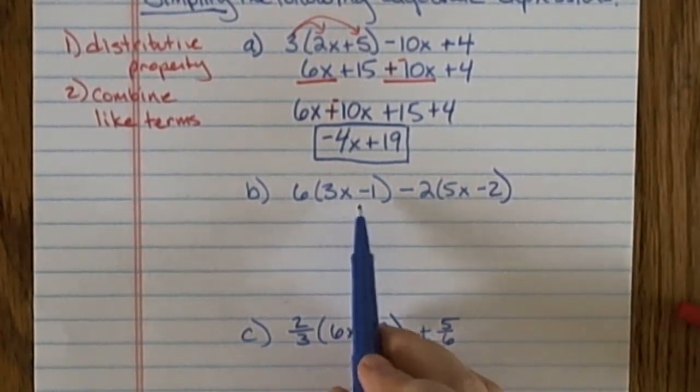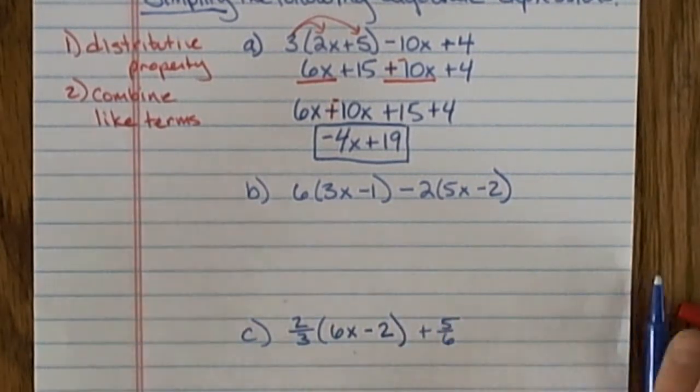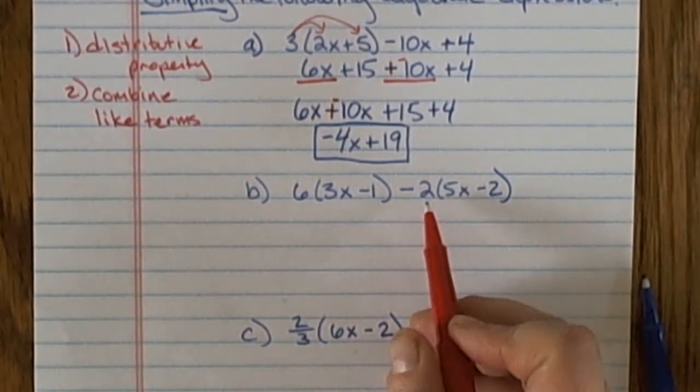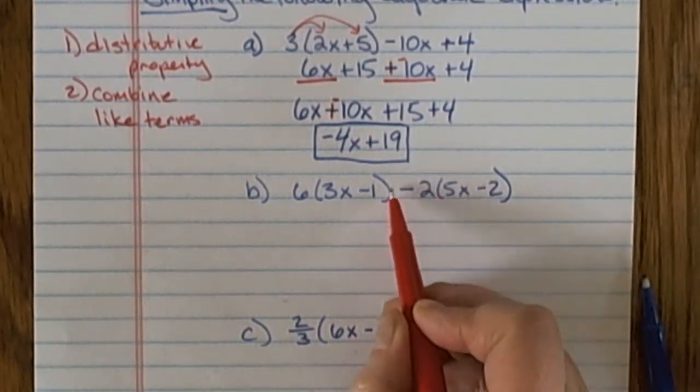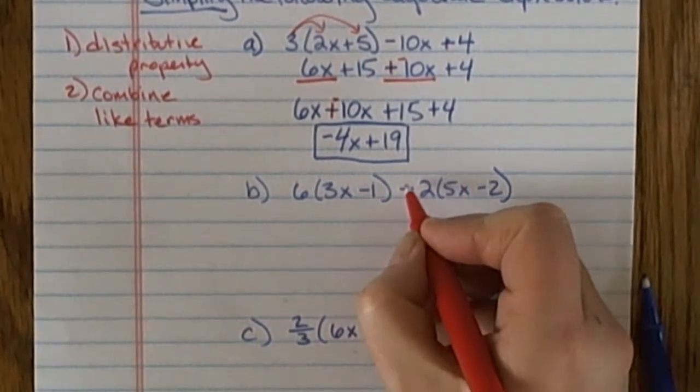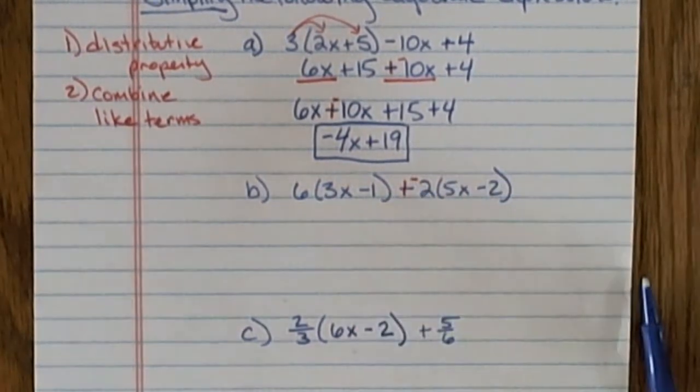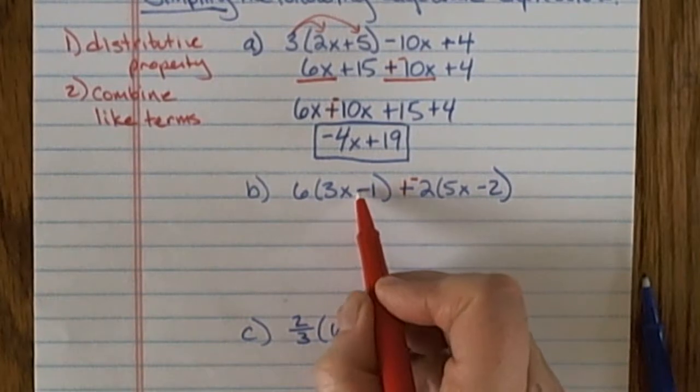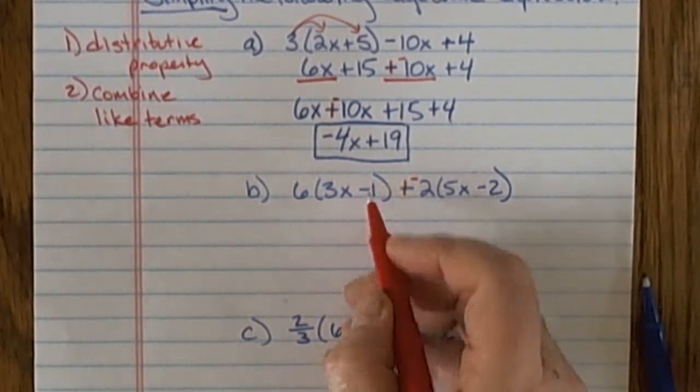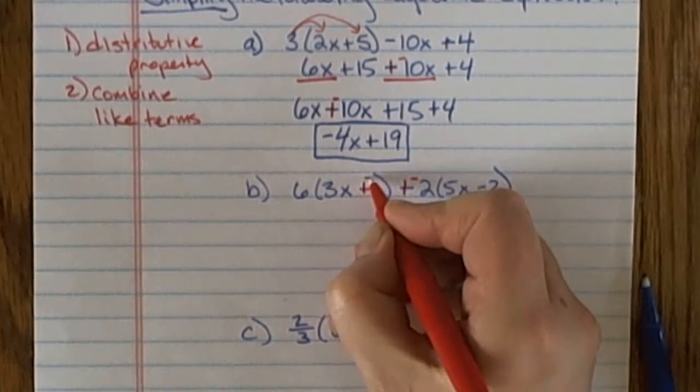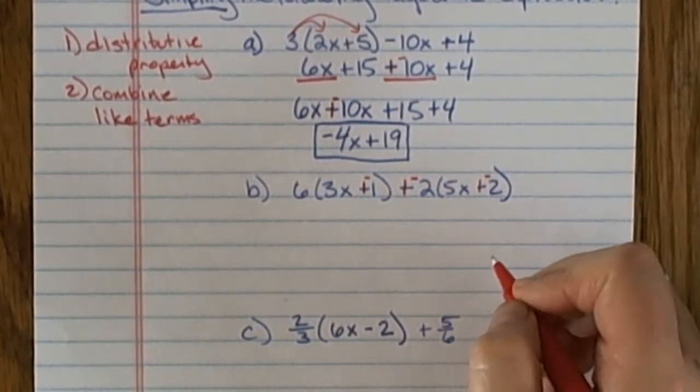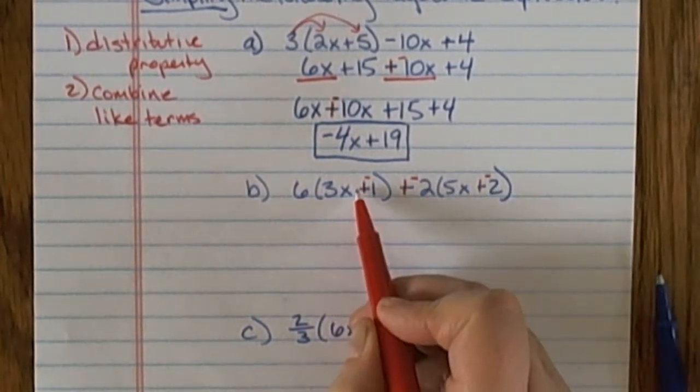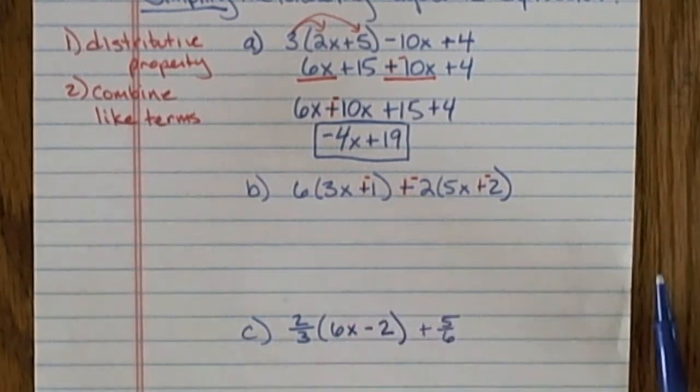On my second example, the distributive property takes place in two spots. I'm going to distribute 6, and here I can think of distributing not just 2 but a negative 2. It says minus 2, but I can think of that as plus a negative 2 if it helps me see that I'm distributing a negative 2. Also, this minus is really going with that 1. I could rewrite it as plus a negative 1 plus a negative 2. Or you can just think of that minus sign as going with the 1, making it like a negative 1.